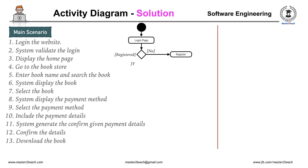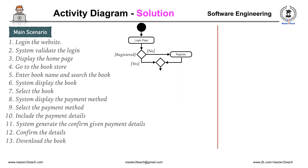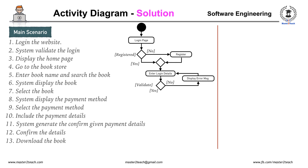If already registered, and after the registration activity, we use a merge symbol to merge the process flow into one, then process to enter login details, followed by a decision node for login verification. If the login details do not pass, display an error message and show the iteration process. If login is successful, display the home page activity and then open the bookstore.